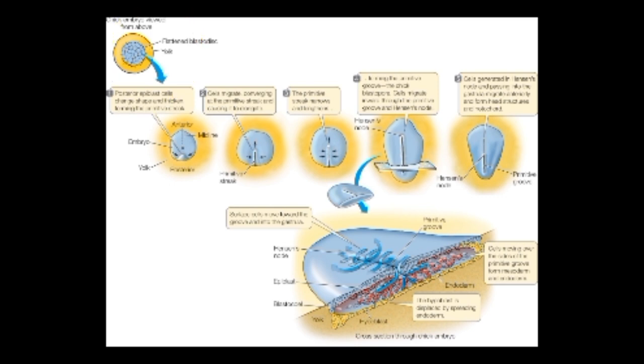If we see the chick embryo, the posterior epiblast cells change their shape and undergo thickening to form the primitive streak. These posterior cells thicken and begin the formation of the primitive streak.